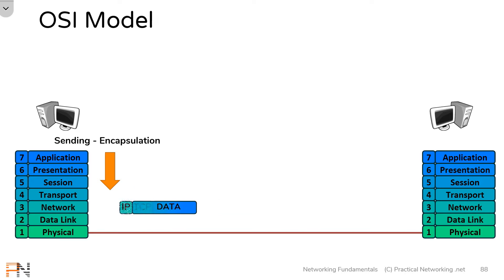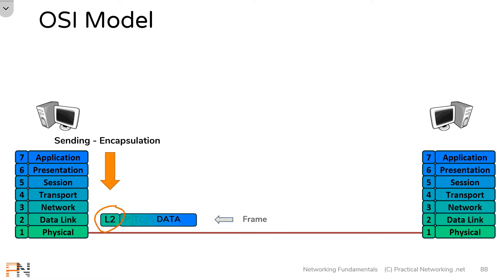That segment is going to be passed down the OSI stack to Layer 3, the network layer, which is going to add another header to facilitate end-to-end delivery — meaning this header will include a source IP address and a destination IP address. The construct of a Layer 3 header and its data is known as a packet. Note that inside the data of the packet is the Layer 4 header from above, but from Layer 3's perspective it doesn't know or care what's inside that data. Layer 3 will then hand that packet to Layer 2, which adds another header to accomplish hop-to-hop delivery, including a source MAC address and a destination MAC address. The construct of a Layer 2 header and its ensuing data is known as a frame.